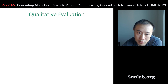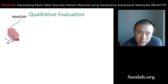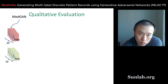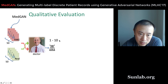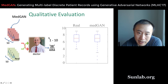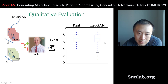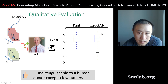We also did a qualitative evaluation. We took 50 fake records generated by MedGAN and 50 real records, mixed and shuffled them, then showed those 100 records to medical doctors and asked them to score realism on a scale of 1 to 10. The distribution of scores for real data and MedGAN-generated records was very close, showing that synthetic records are nearly indistinguishable even to human medical experts.